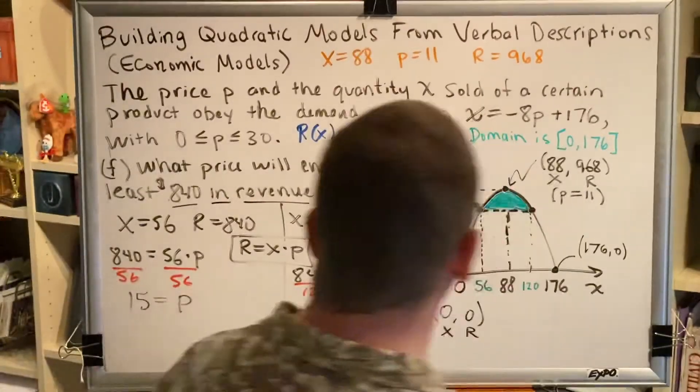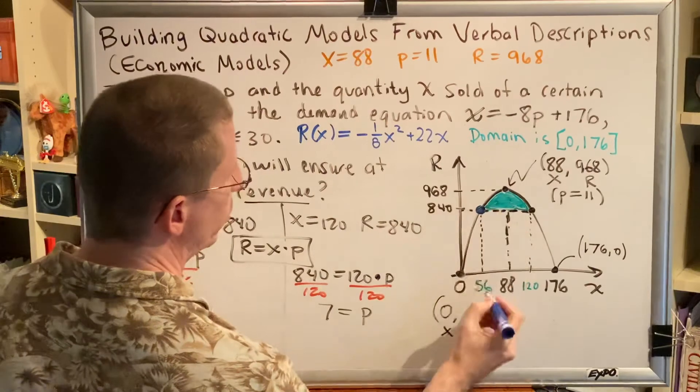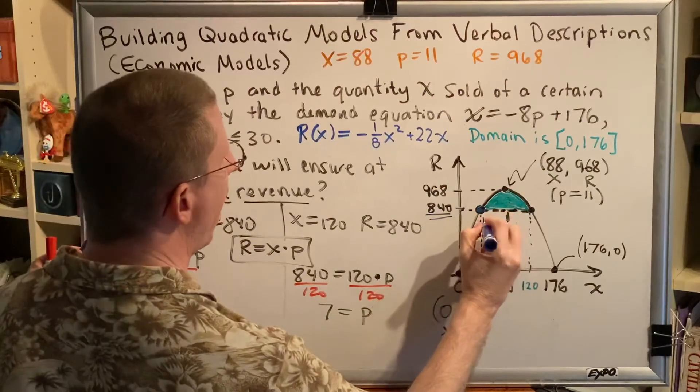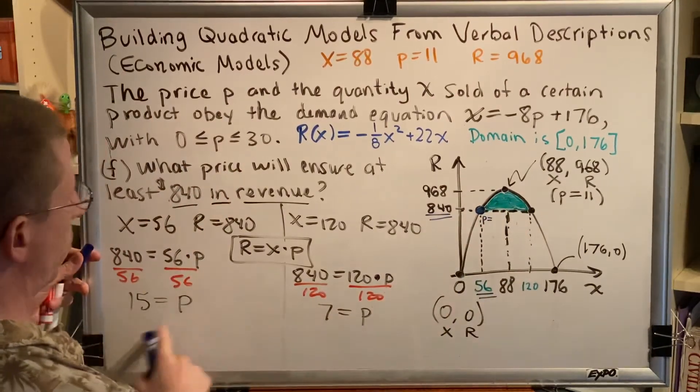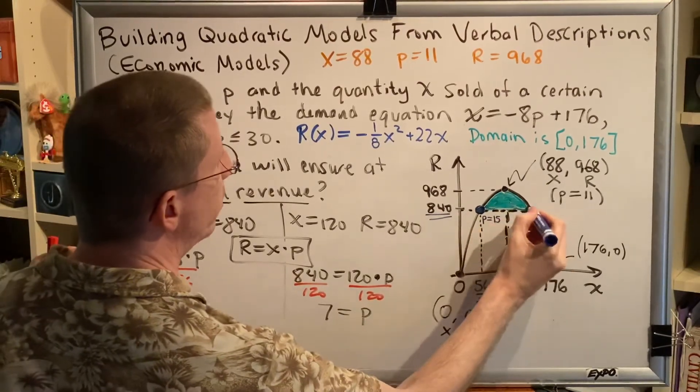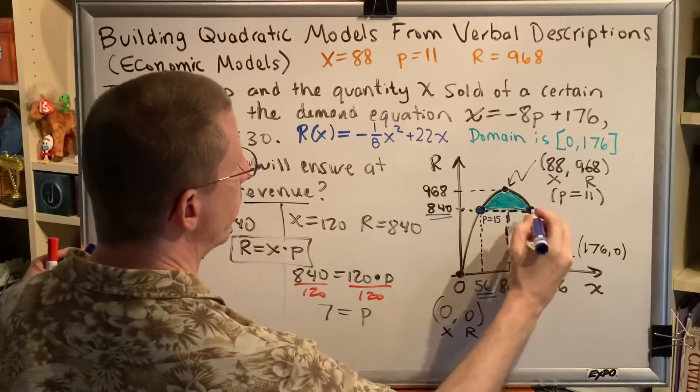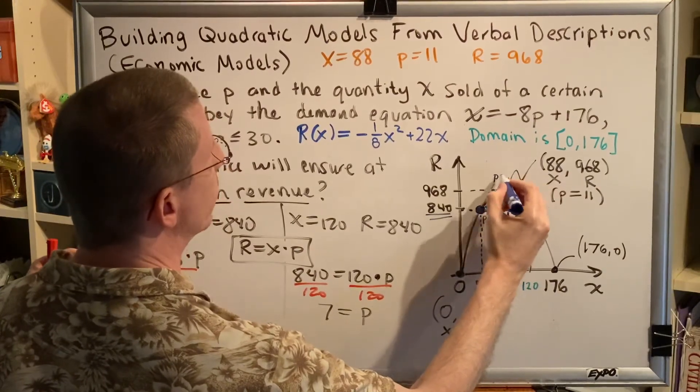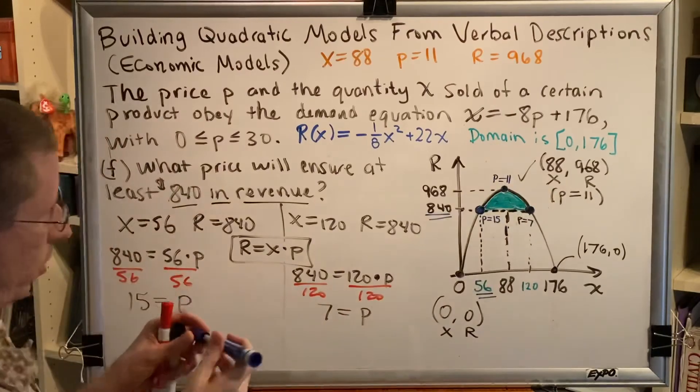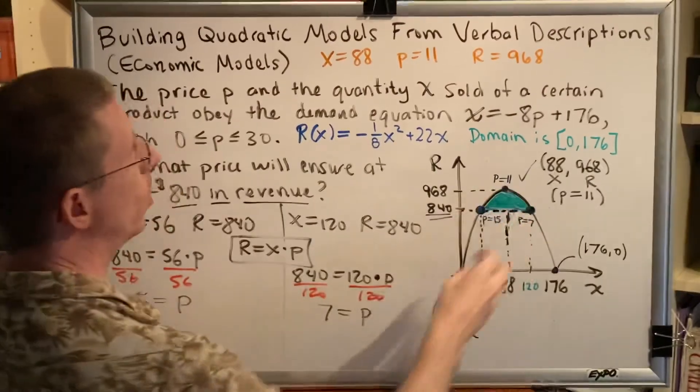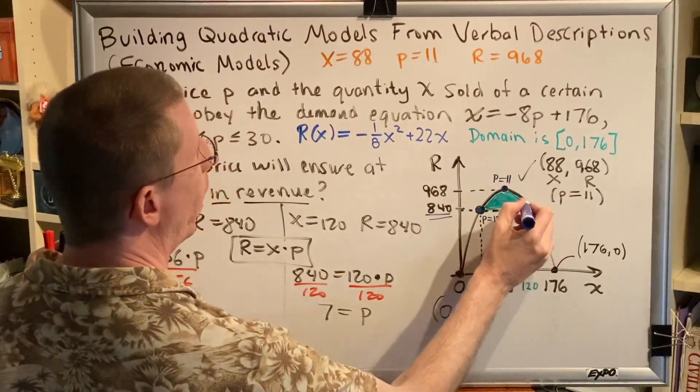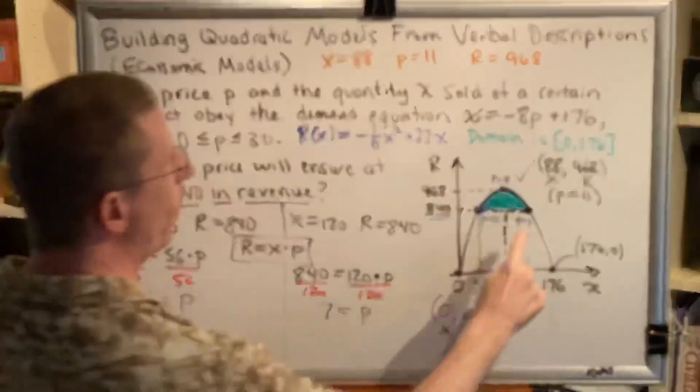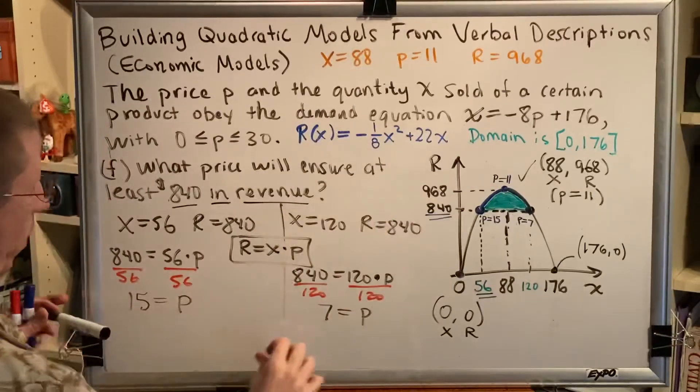So, this ordered pair on our diagram, which lists a value of x and a value of r, gives us a value for p of 56 was this one, $15. This dot on our diagram must be the other one, so this is where the price is equal to $7. And this one right here at the top is where the price was equal to $11. So, you can see that every dot on our diagram corresponds to a different price. 7 going all the way up to 11 and then continuing up until we get to 15. So, if the price is anywhere in between $7 and $15, the revenue will be $840 or higher.